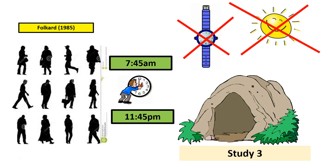The second supporting study was by Folkard in 1985. This researcher placed 12 individuals also in a cave, without any exogenous zeitgebers like light, and told them to wake up at 7:45 a.m. and go to sleep every day at 11:45 p.m. What the researchers gradually did was quicken the time — looking at waking at 7:45 a.m. and sleeping at 11:45 p.m., but gradually quickening the schedule to make it resemble a 22-hour cycle.